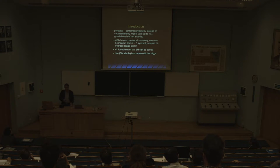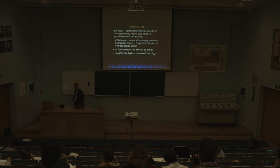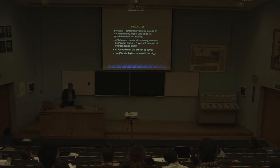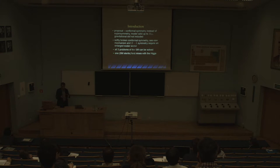All three problems I've mentioned can be solved under conditions I will describe. There is one certain prediction of the model: one new field that mixes with the Higgs field — a heavier brother of the Higgs. That is a definite prediction for the LHC. It shouldn't strictly be called a Higgs since it doesn't come from the Higgs mechanism, but there are two Higgs-like particles in a sense.